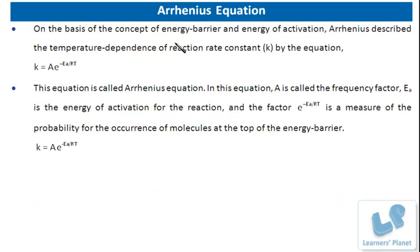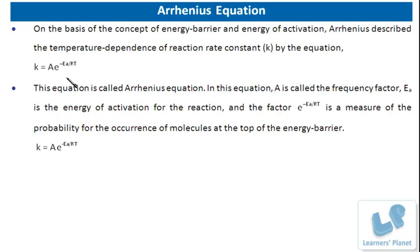Arrhenius equation: on the basis of the concept of energy barrier and energy of activation, Arrhenius described the temperature dependence of the reaction rate constant by the equation k = Ae^(-Ea/RT). This is a mathematical relationship between the rate constant and temperature, deduced on the basis of a number of experiments.